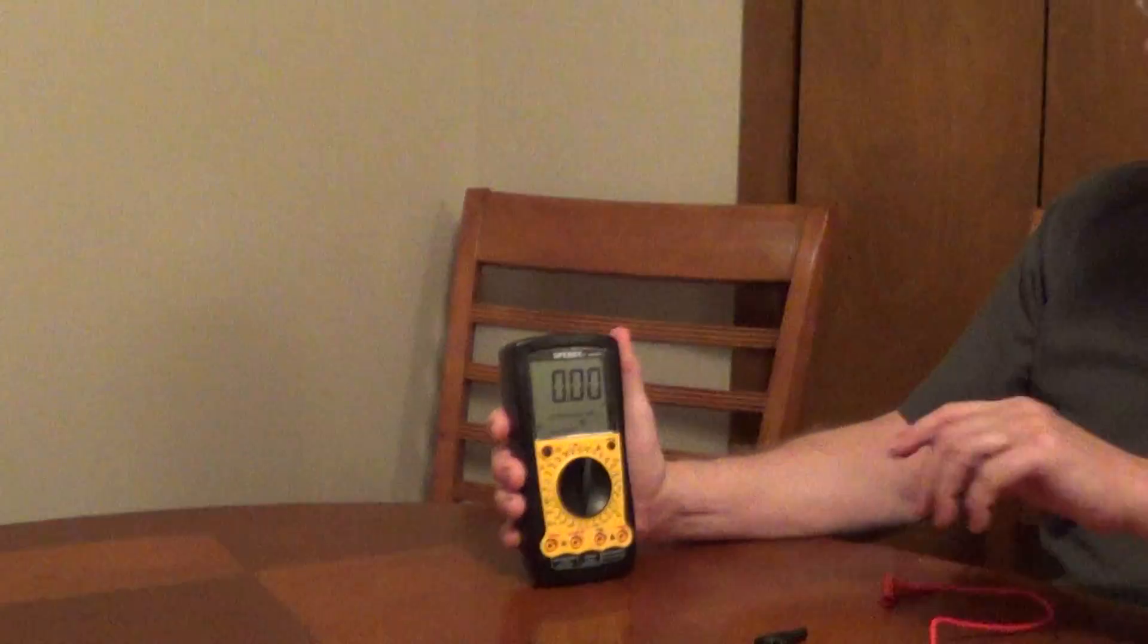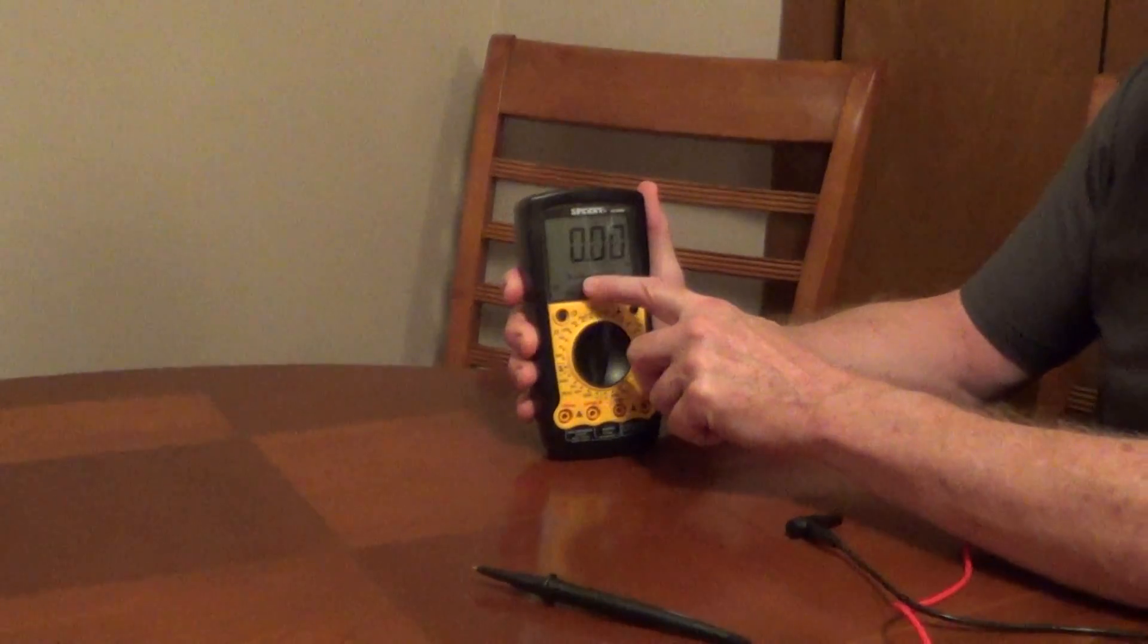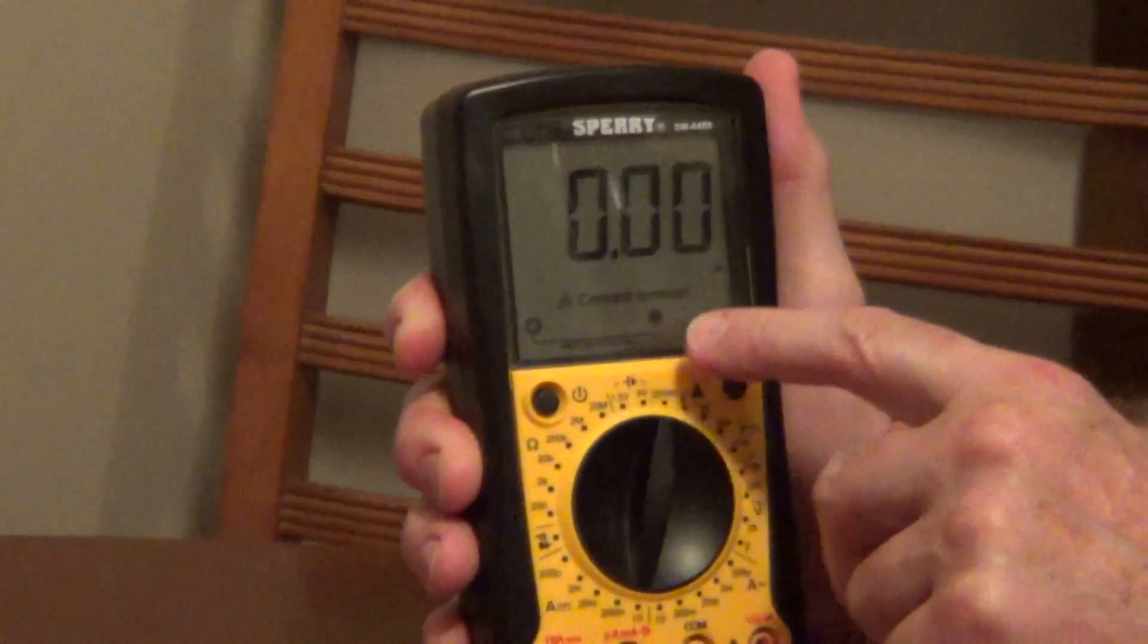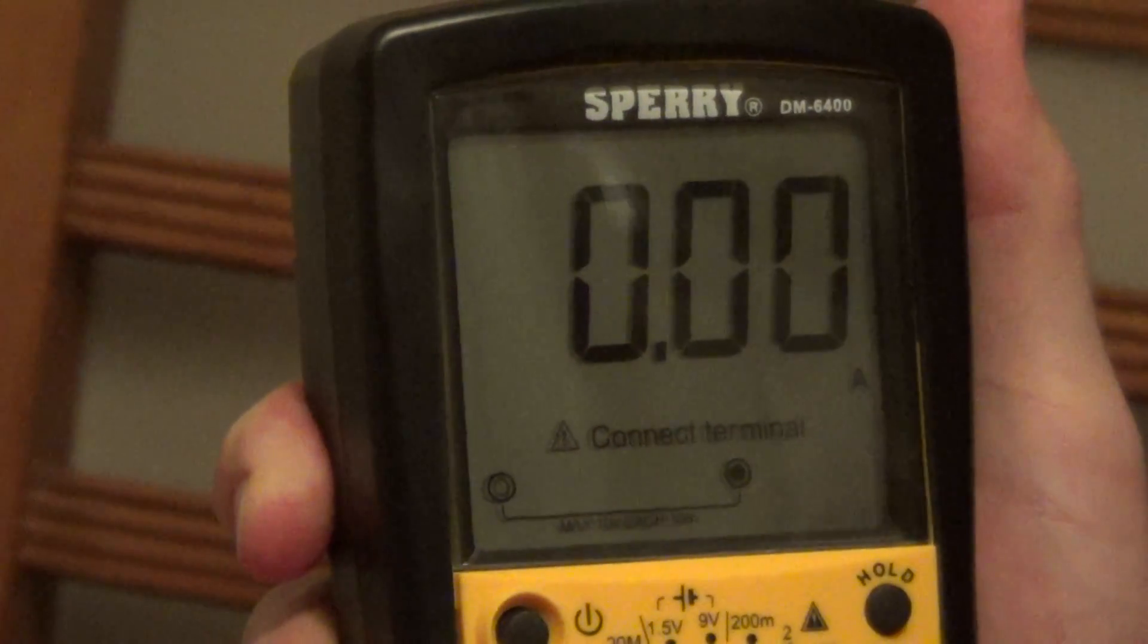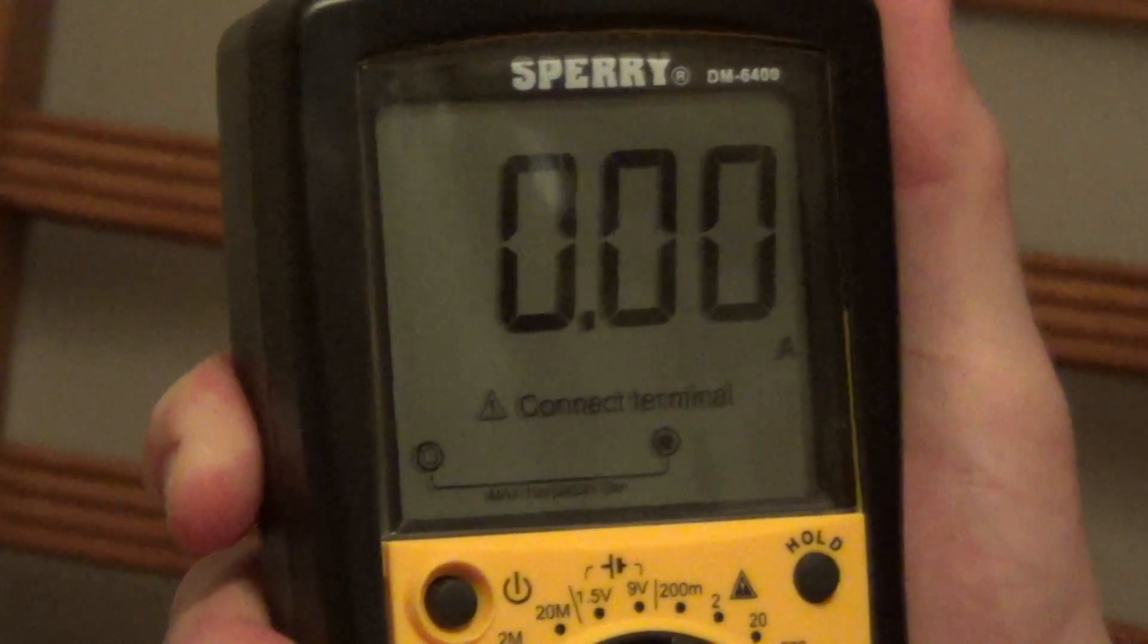A subscriber asked about the Sperry DM6400 and why the display always shows a connection terminal symbol with a little triangle and exclamation point. That symbol is there to get your attention.